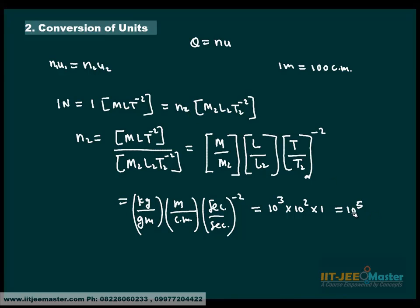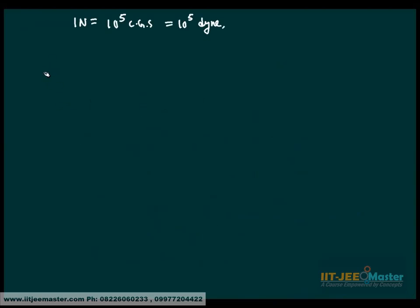So N2 comes out to be 10 to the power 5 CGS units of force that is 10 to the power 5. Instead of using this type of technique I use different process. I use different process that is as follows.